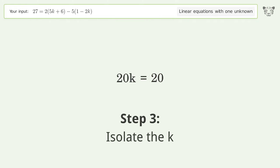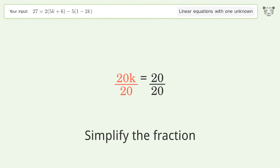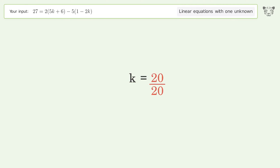Isolate k by dividing both sides by 20, then simplify the fraction. The final result is k equals 1.